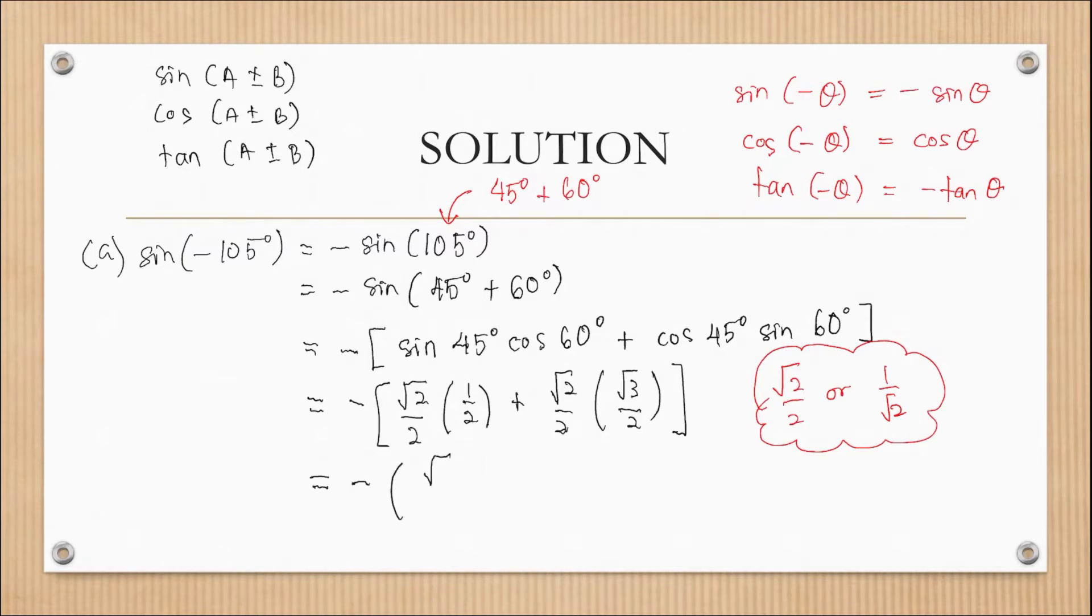Now simplify. Then we have √2/4 plus √6/4. And I can factor out 1/4. Then we have negative 1/4 in bracket (√2 + √6).